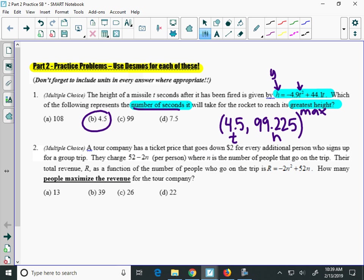Alright, number two. There's a lot of extraneous information here, so I'll focus you in on the important part. A tour company has a ticket price for the number of people that go on a trip. I'm going to skip you here to the last sentence, the second to last sentence. The total revenue, revenue is like profit, how much money they make, is determined by the number of people who go on the trip. The equation is right here. That's the equation we're looking at. How many people maximize the revenue?